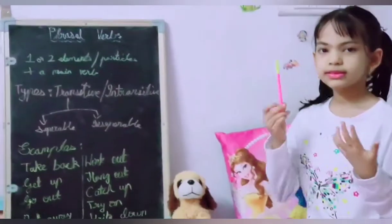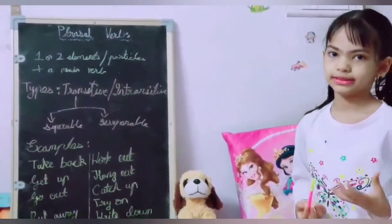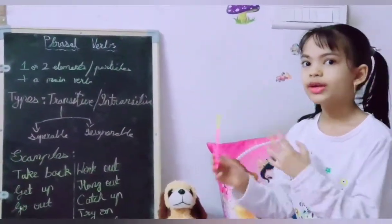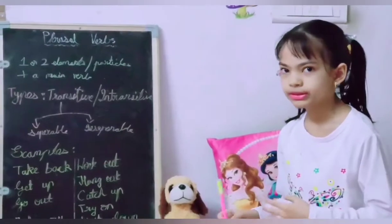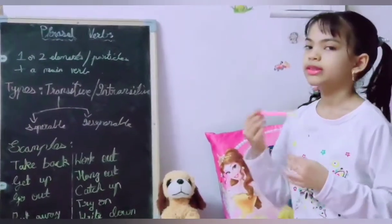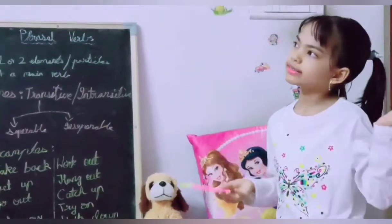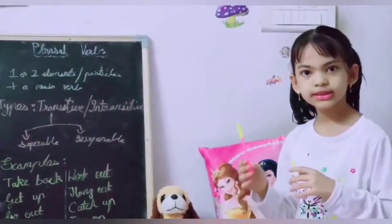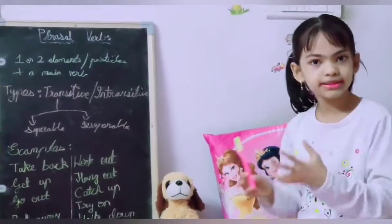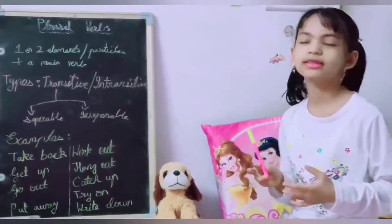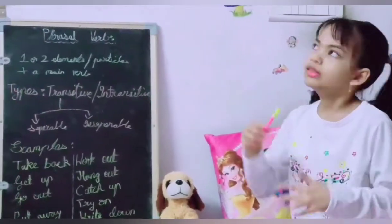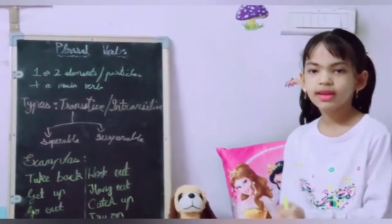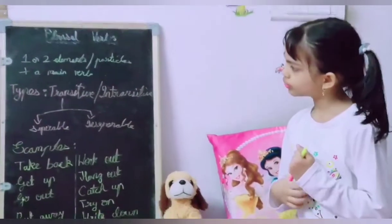In a phrasal verb there can also be two particles, just like in 'look up to.' Many kids look up to Superman. 'Look up to' means to admire somebody — it's not literally looking up to somebody.